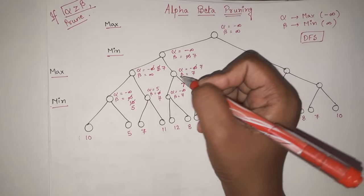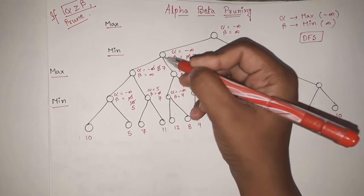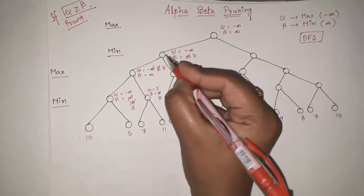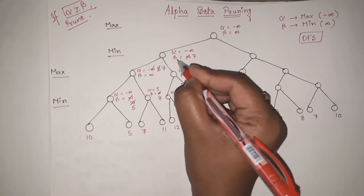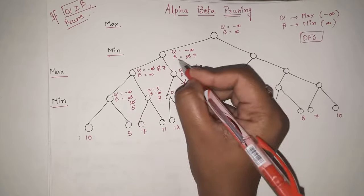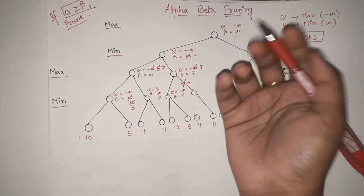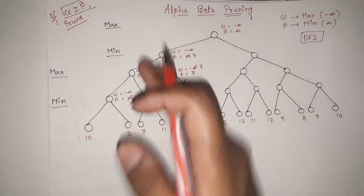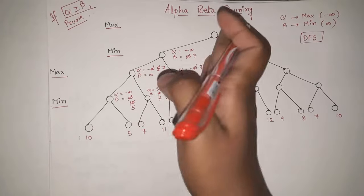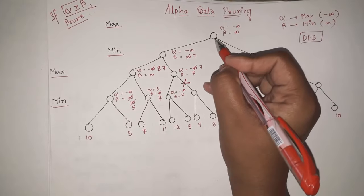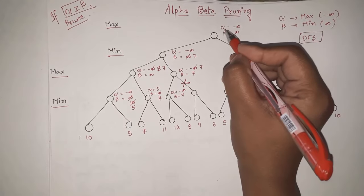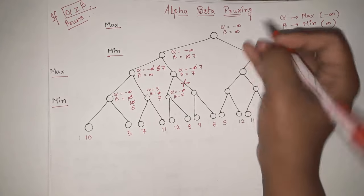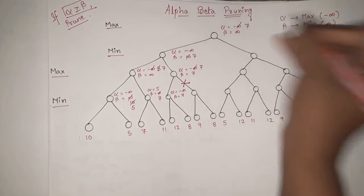Without going further into that pruned branch, we simply go upward. It is a min level, and all three values are 7, so no update needed. After that, we go up further — it is max, so alpha is updated. Out of minus infinity, minus infinity, and 7, the maximum is 7. So this is updated to 7.